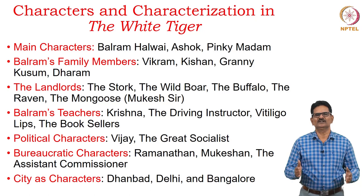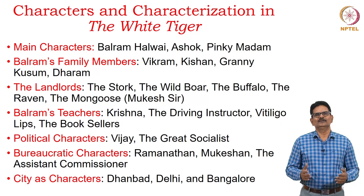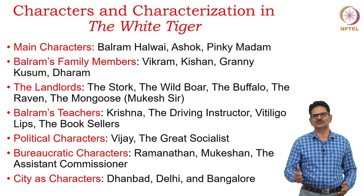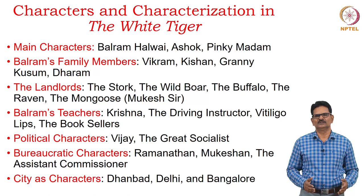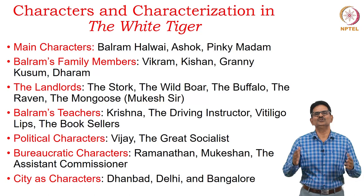We can also identify cities as characters in this novel. We start from Dunbar, then go to Delhi. We also see Gurgaon, and then come to Bangalore via Hyderabad. If time permits we will discuss these cities; otherwise we will look at the human characters in the novel.